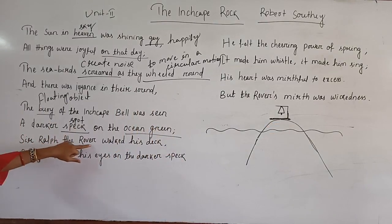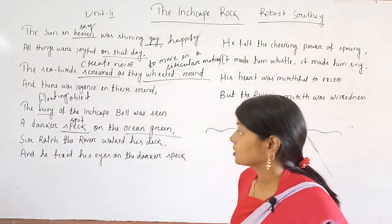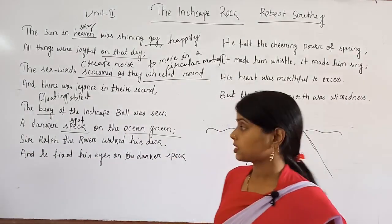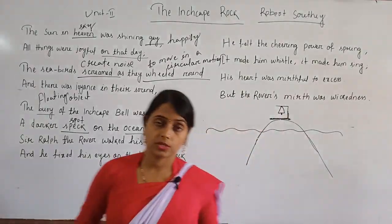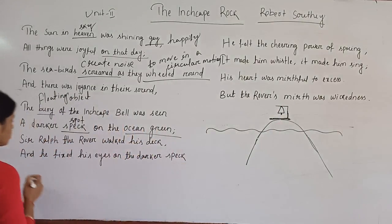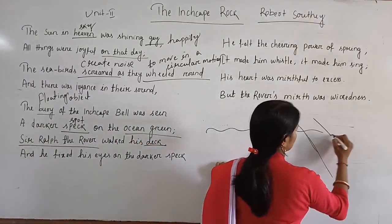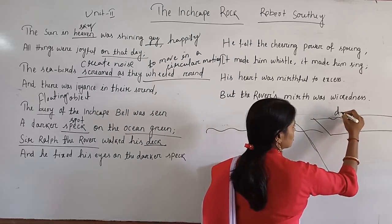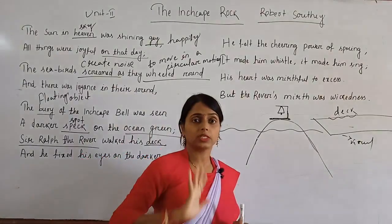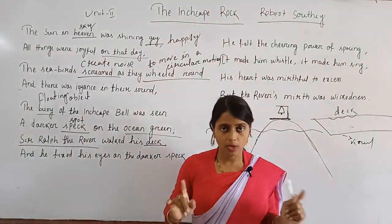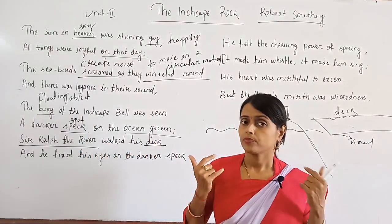Now another person came into the story — Sir Ralph the Rover. 'Rover' means a person who doesn't settle in a single place with a permanent home. He is the second character; the first was the Abbot of Aberbrothok. Sir Ralph the Rover walked his deck. 'Deck' means the flat upper portion of a ship where people can walk. Sir Ralph was walking on the deck and he was the captain of the ship, so he was feeling very proud.